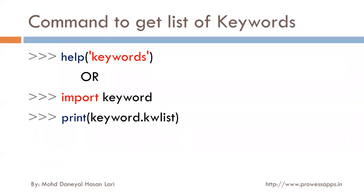If you want to see how many keywords are available in your Python version, you can use the command `help('keywords')` to see all keywords available in that particular version. Or you can use `import keyword` and then `print(keyword.kwlist)` to see the keyword list.